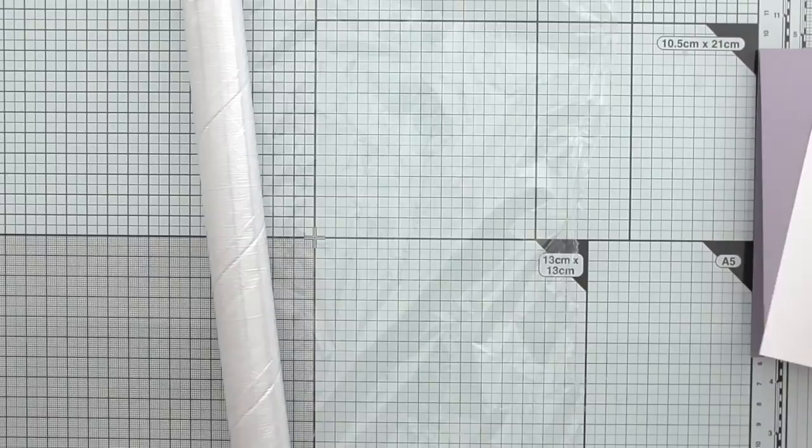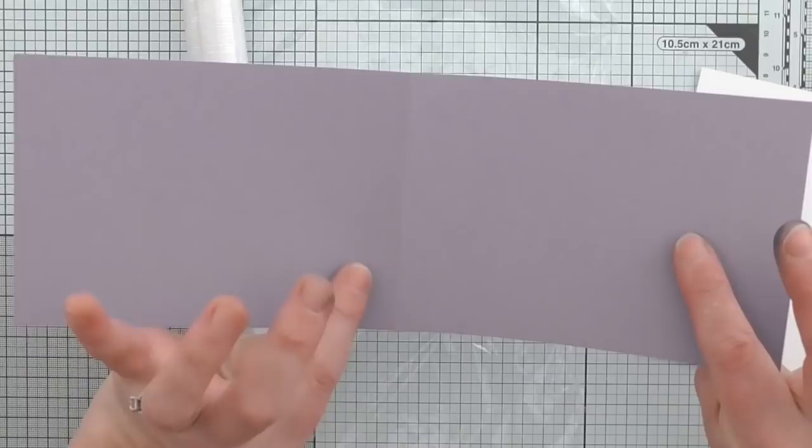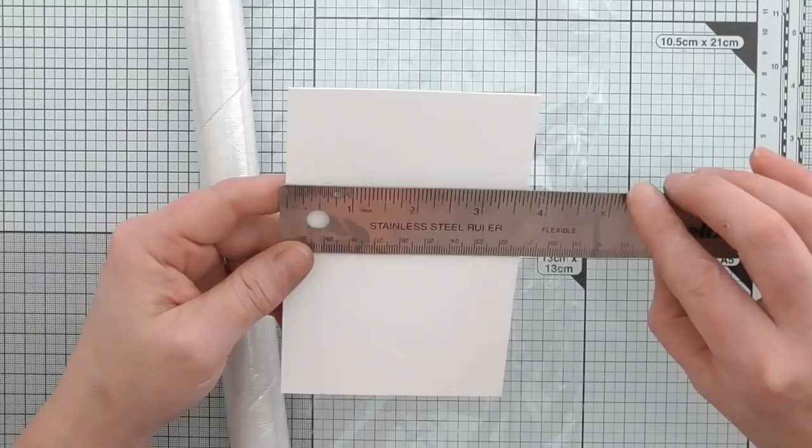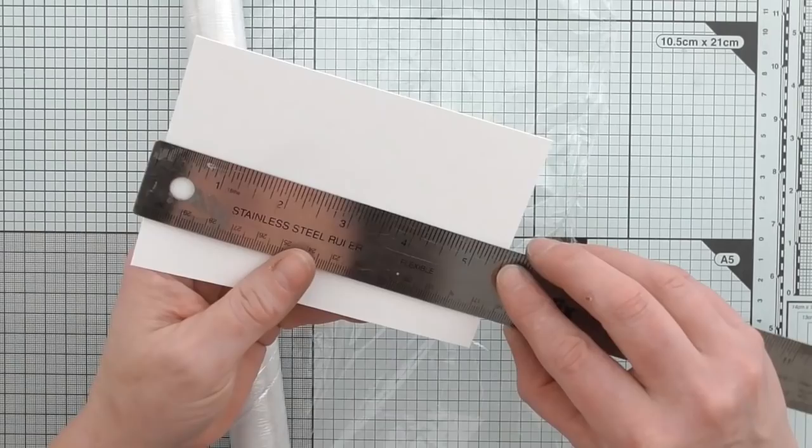So I've got Highland Heather here, 11 and 3 quarters by 4 and 1 eighth scored in the middle at 5 and 7 eighths. My card base is thick whisper white so that it can withstand getting a bit wet so it doesn't go a mess. And this is 3 and 3 quarters by 5 and 1 half.